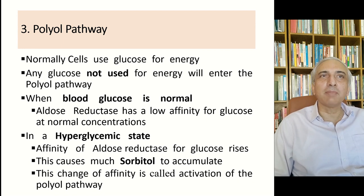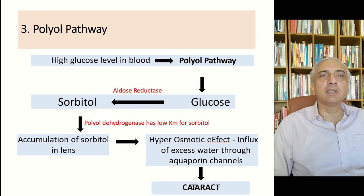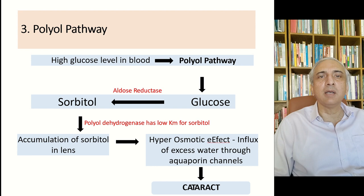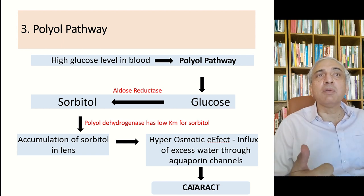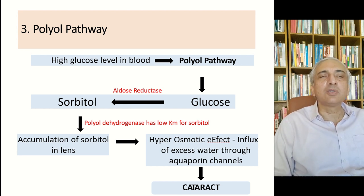The third pathway — the polyol pathway — is the most important, especially in diabetic patients. Normally, cells use glucose for energy; any glucose not used for energy enters the sorbitol pathway. In a hyperglycemic state, the affinity of aldose reductase for glucose increases, causing much sorbitol to accumulate. This is called activation of the polyol pathway. Researchers are investigating aldose reductase inhibitors to reduce sorbitol-related damage in diabetics.